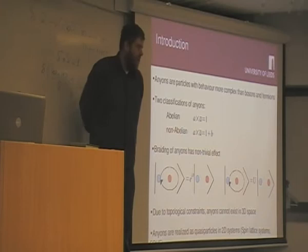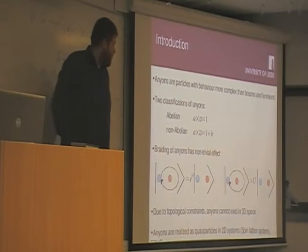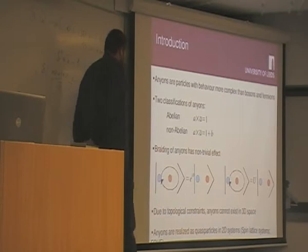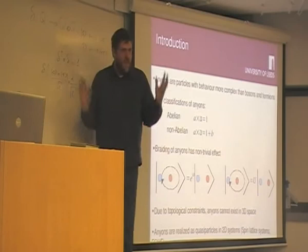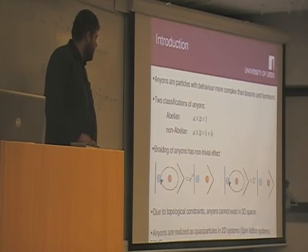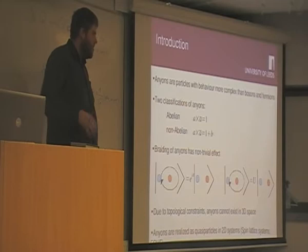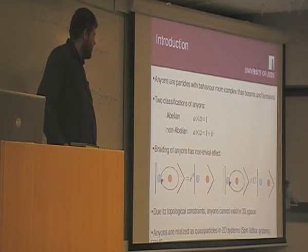But for non-abelian anyons, you don't know this. If you bring together A and its antiparticle, sometimes they will annihilate to vacuum, and sometimes they might become another type of particle B. So just by knowing what type of anyons you have, you don't know what they're going to become. There's some non-local degree of freedom associated with non-abelian anyons, and there's a Hilbert space for that, which we call the fusion space.